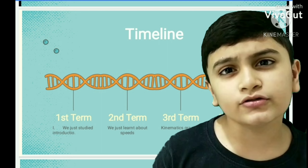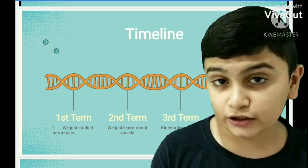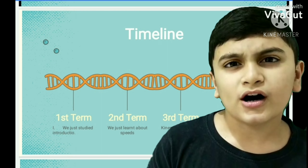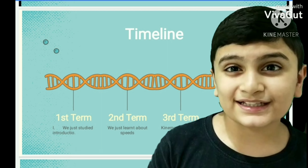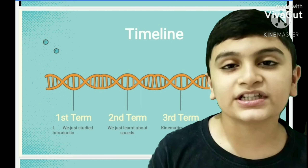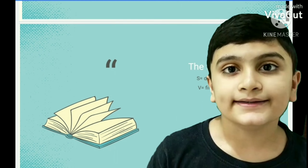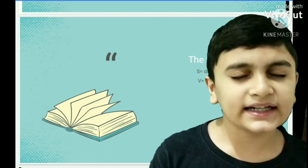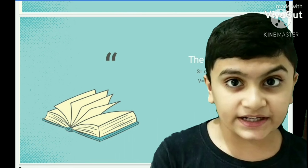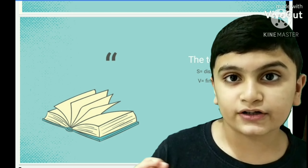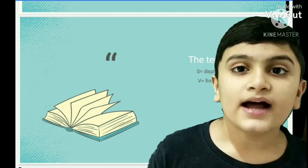Let me introduce you to many terms. The first term is S, which is equal to displacement. Then A, which is equal to acceleration. T is time. V is the final velocity. U is the initial velocity, and that is it.